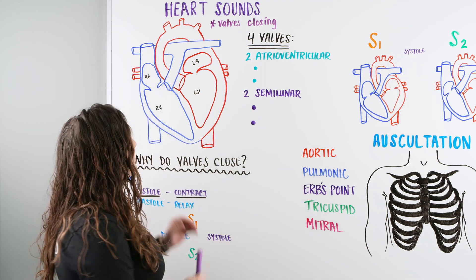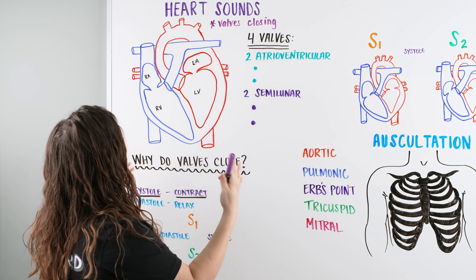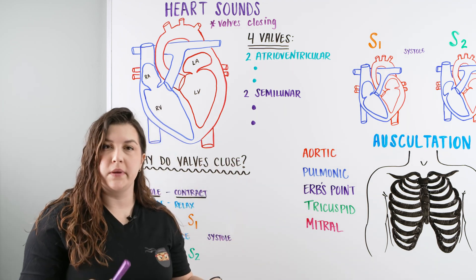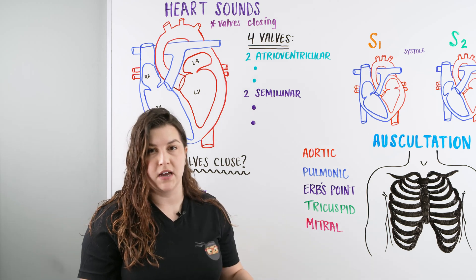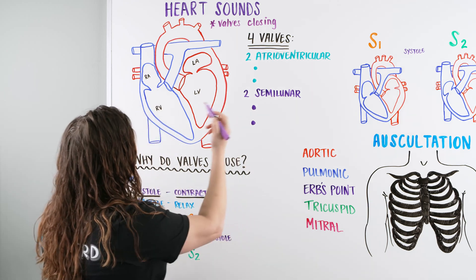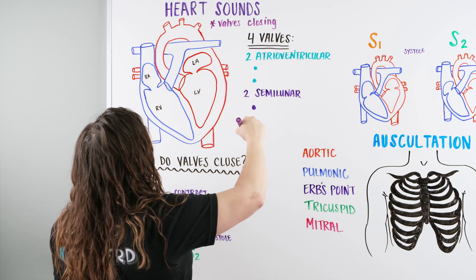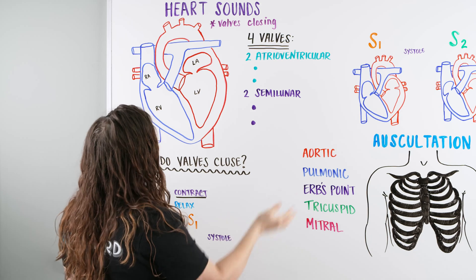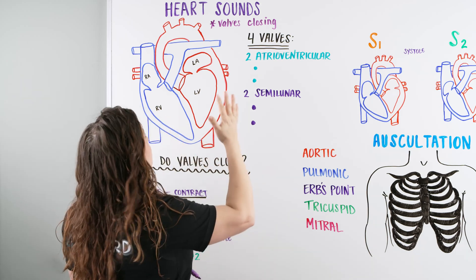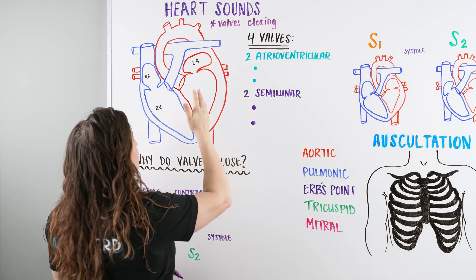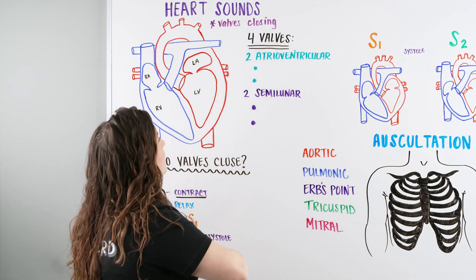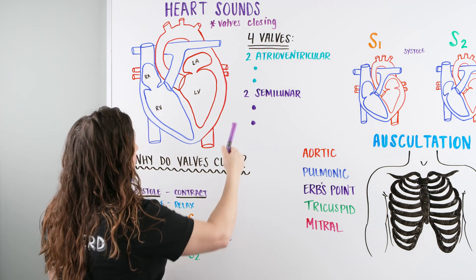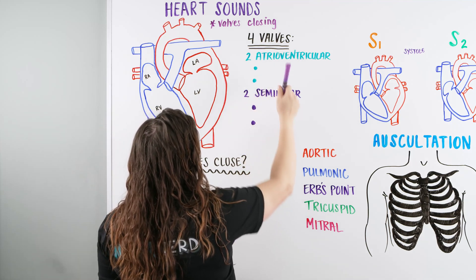Alright Ninja Nerds, so heart sounds. We're going to be talking about them today, and what we need to really focus in on is how does the heart make these sounds. It's not necessarily the heart that's making the sounds, but it's the valves inside the heart, particularly the valves closing. So we have four valves and four chambers. Within the valves they can be categorized into two different types: the atrioventricular valves and the semilunar.